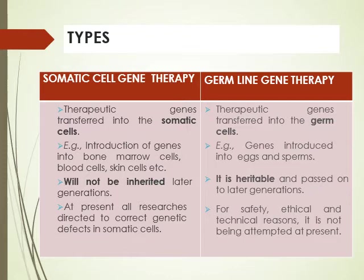In germ line gene therapy, the gene is introduced into egg and sperm, because egg and sperm are the germ cells. In somatic cell gene therapy, the change will not be inherited in later generations — the gene will be in the body of the patient but will not be passed on. However, in germ line gene therapy, since the gene is present in the sperm and egg, it can be inherited and passed on to later generations.